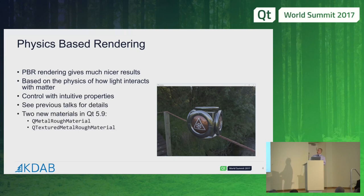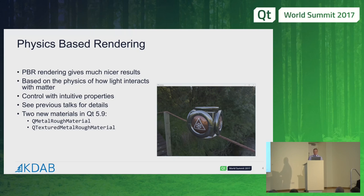In Qt 5.9, these are presented as a pair of materials. There's the QMetalRoughMaterial, which allows you to set constant properties across the whole surface for the base colour, metallic level, and roughness. And then there's also the textured metal rough material, which allows you to use textures for these inputs, as well as providing the option for you to specify a normal map and also an ambient occlusion map.